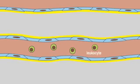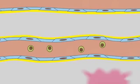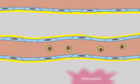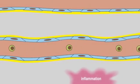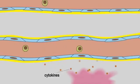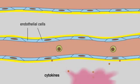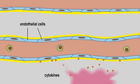Leukocytes are white blood cells that help fight infection. At sites of injury, infection, or inflammation, cytokines are released and stimulate endothelial cells that line adjacent blood vessels.